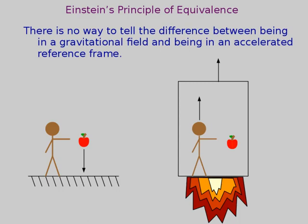General relativity starts with the principle of equivalence. Here's a slide I used in a lecture for a mathematics class: Einstein's principle of equivalence states there is no way to tell the difference between being in a gravitational field and being in an accelerated reference frame. On the left we have a person dropping an apple on the surface of the earth — the apple accelerates towards the ground due to gravity. On the right, a completely different person is in deep intergalactic space with no gravity anywhere, but he's in a rocket accelerating upward at 9.8 meters per second squared.